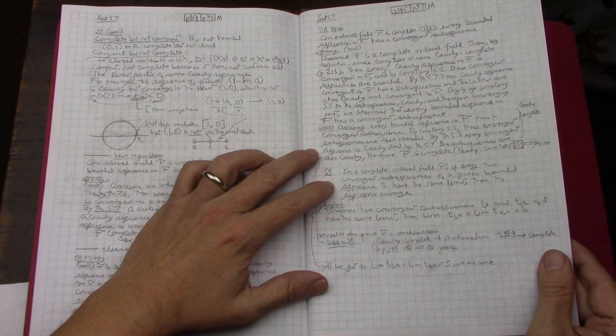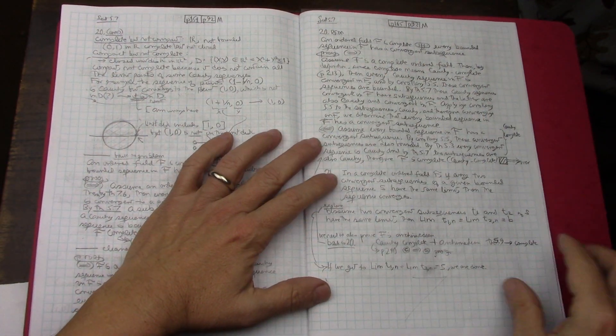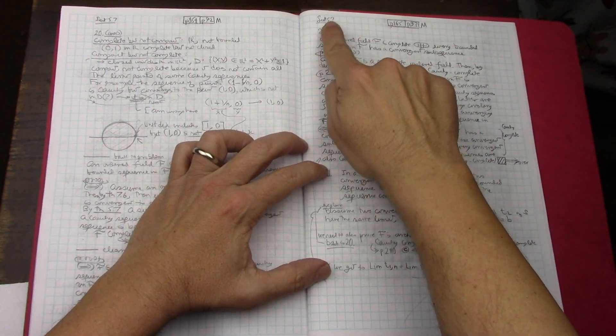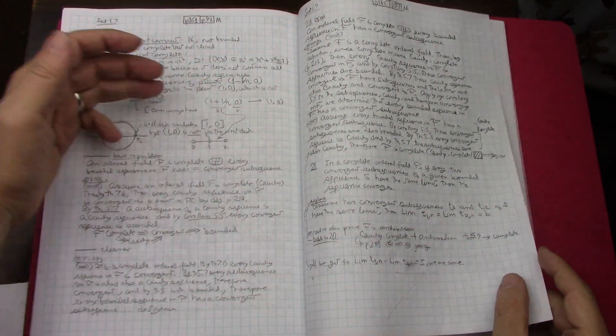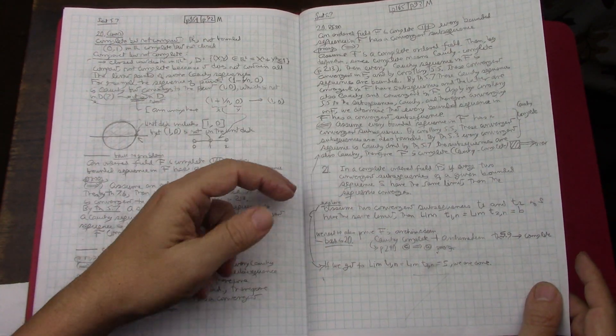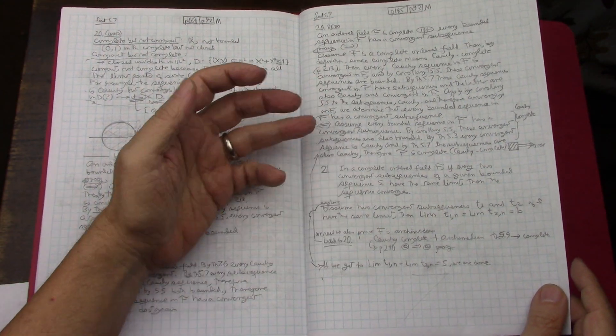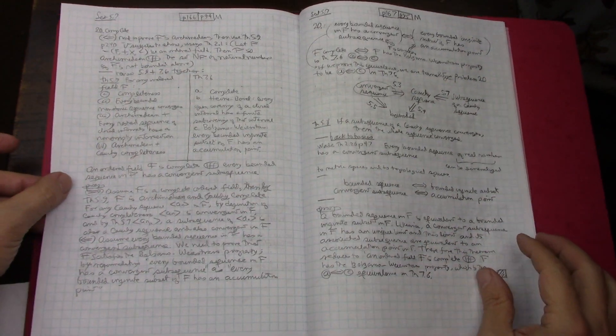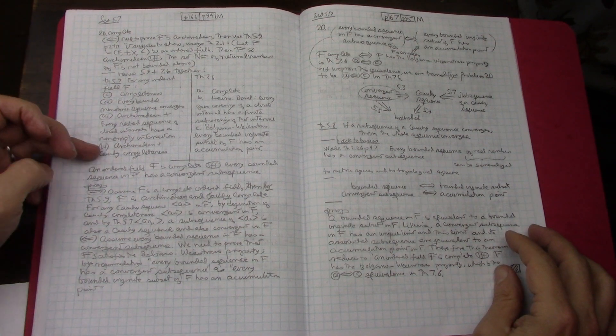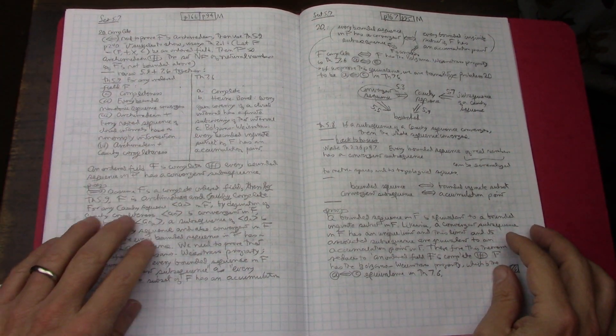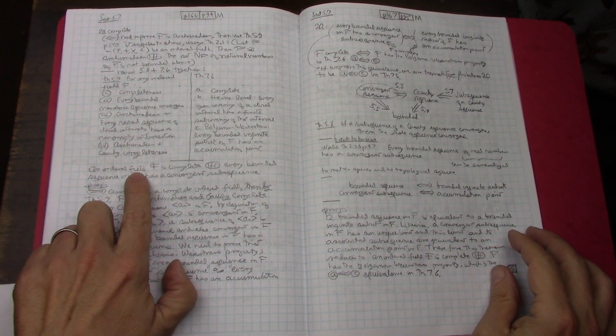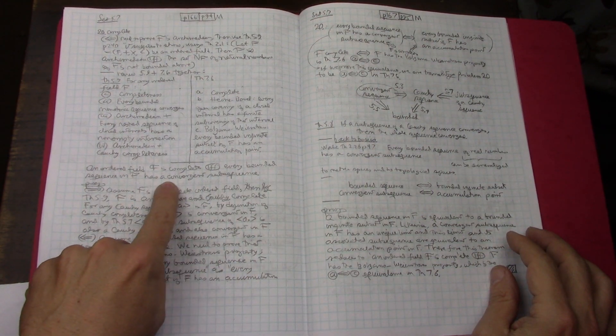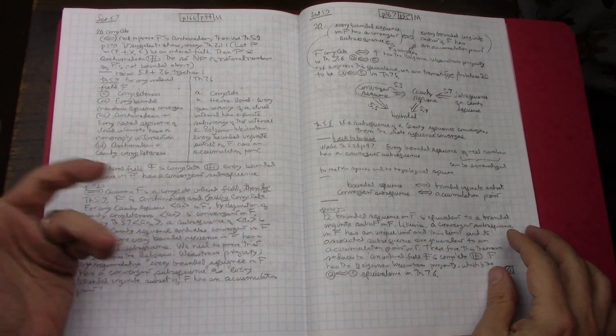Then I did a couple of hard problems. And it was very interesting because in one of them, problem number 20 in section 5.7, at first I tried a brute force of writing the proof. And I even thought I was done and I moved on to 21. And then I was like, no, I'm not done. And I went back and I realized that the proof, which says an ordered field F is complete if and only if every bounded sequence in F has a convergent subsequence. I was like, I know I've seen that before.